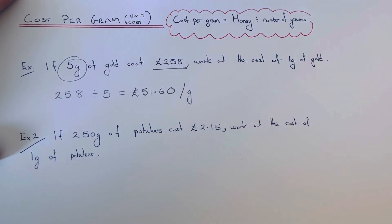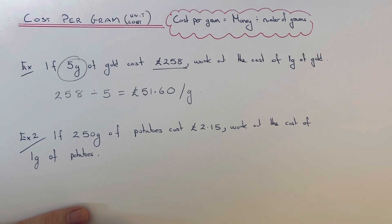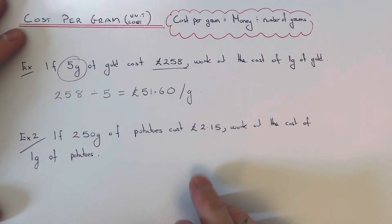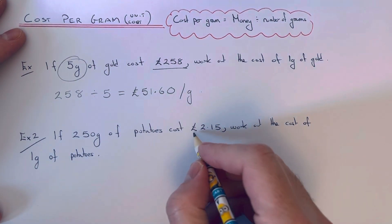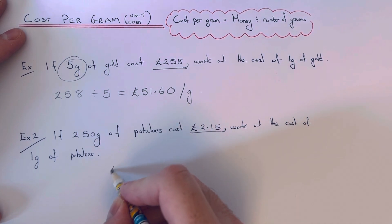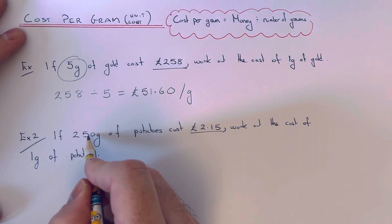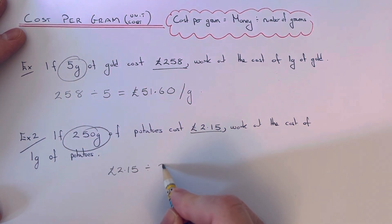Let's have a look at the second example. If 250 grams of potatoes cost £2.15, work out the cost of one gram of potatoes. Again, we get our money, which is £2.15, and divide that by how many grams we are buying, which is 250.